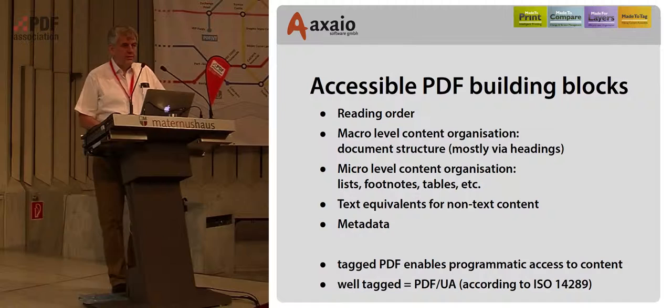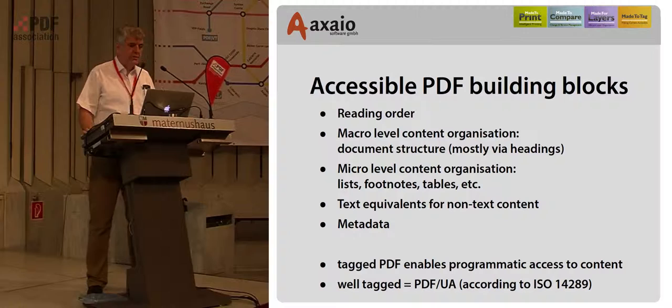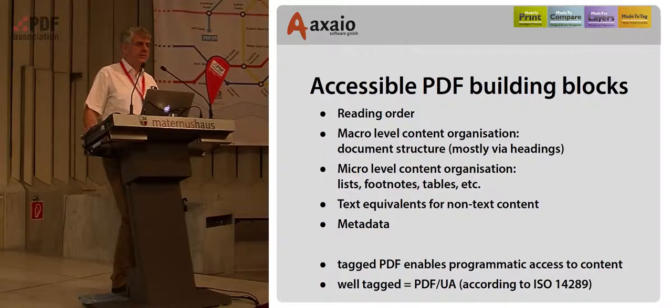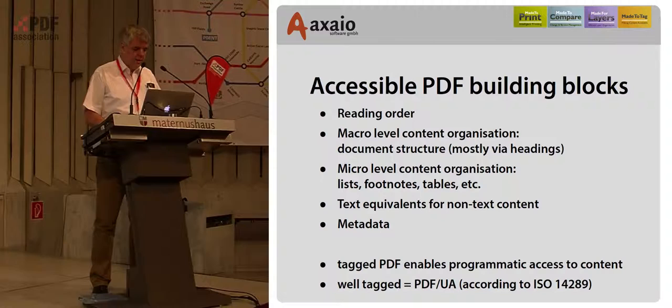PDF-UA files have special extra characteristics beyond offering a nice visual presentation. They define the reading order of the content. They organize the content on macro levels, like heading structure and so forth. They also organize sub-structures like lists and tables. They offer text equivalents for anything that is not already text. And they provide decent metadata to provide access to people who might not be looking at a screen. The ISO standard that defines how to do this is the PDF-UA standard.